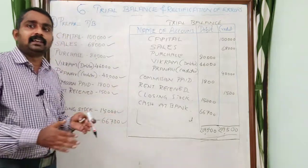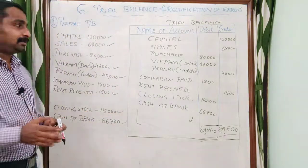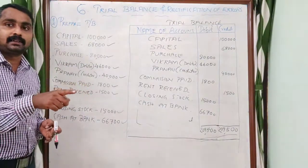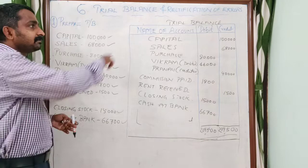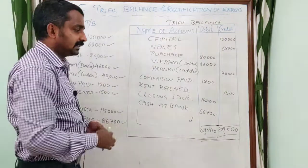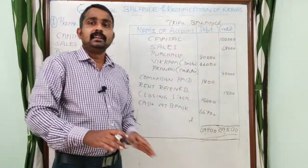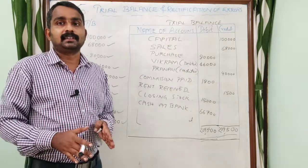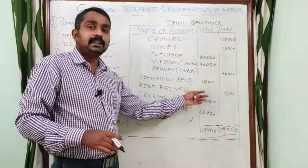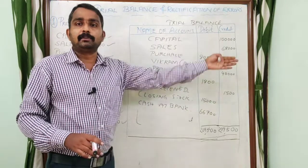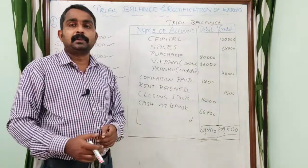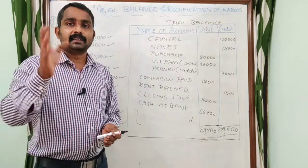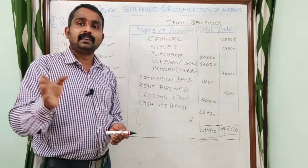So that is how we prepare a trial balance using the balance method. Once the trial balance is prepared, we use it as a basis to prepare the financial statements — the trading account, profit and loss account, and balance sheet. That is the last part of this topic. We will discuss the next class topic in our next session. Thank you.